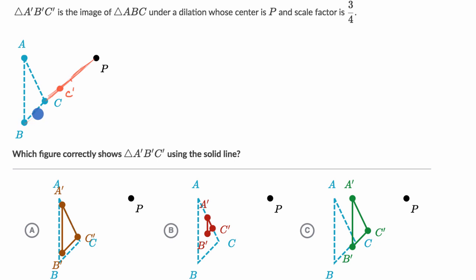If we have this line connecting B and P like this, let's see, half of that is there. 3 fourths is going to be there. So B prime should be there.